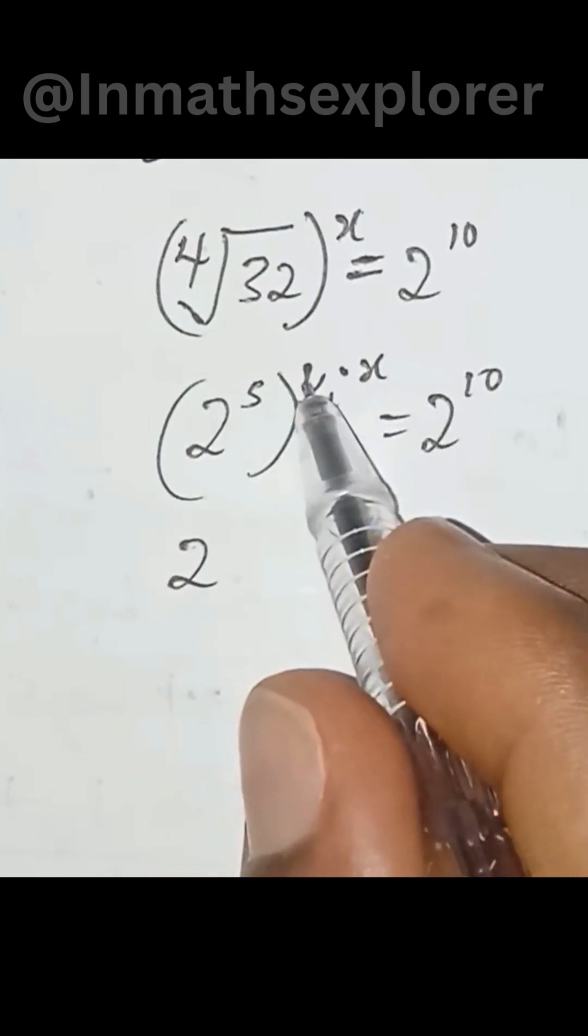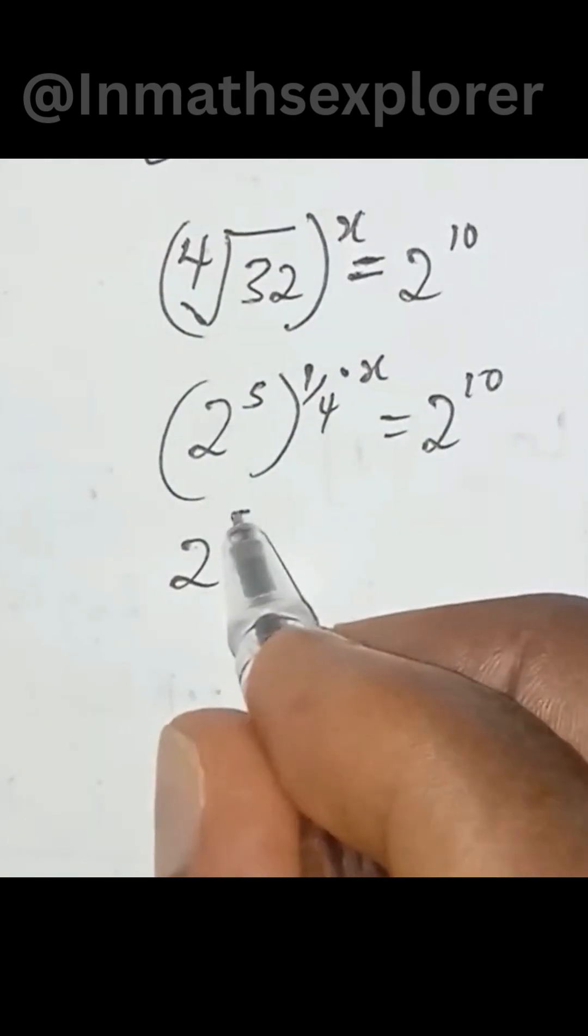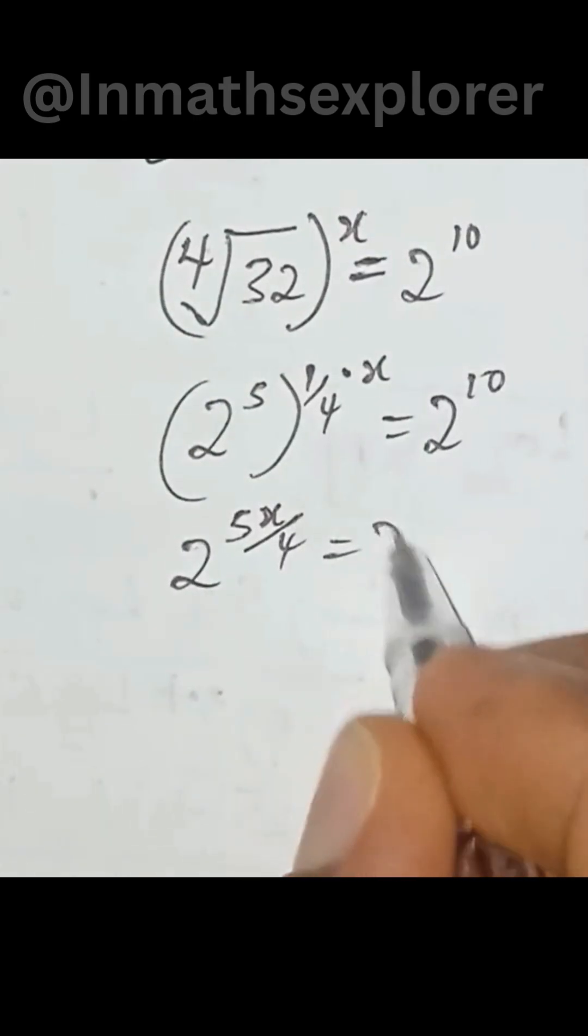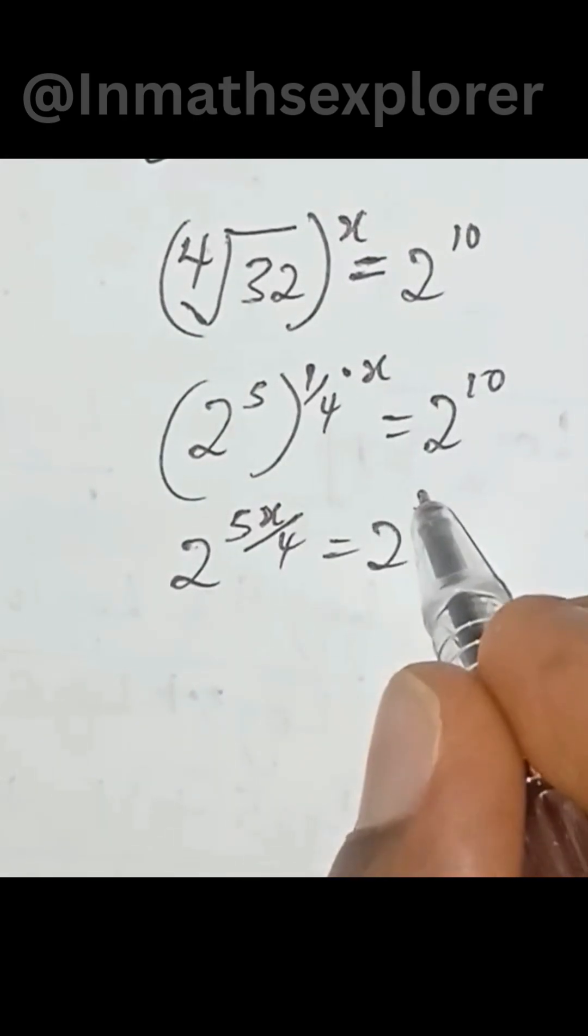We have 2 to the power of 5 multiplied by 1 multiplied by x. We have 5x over 4 equal to 2 to the power of 10.